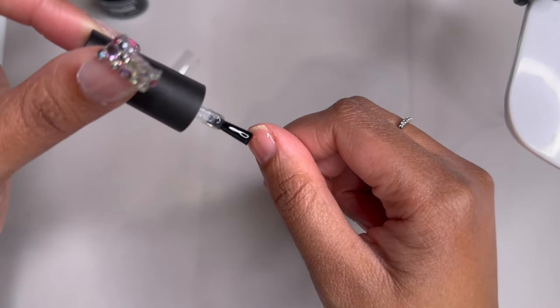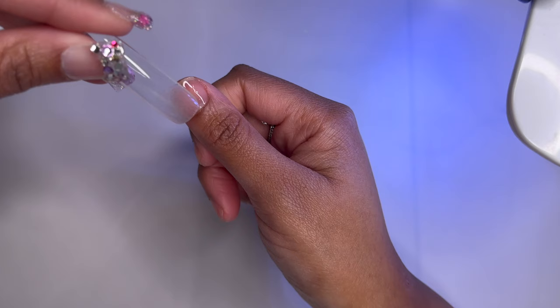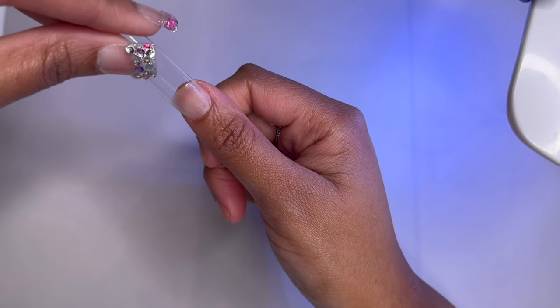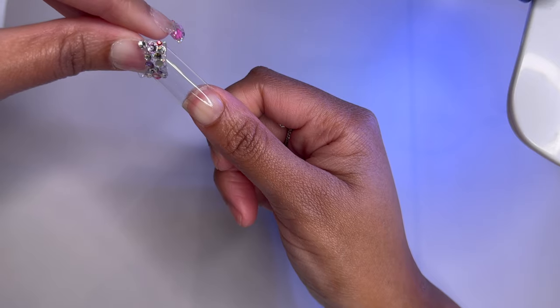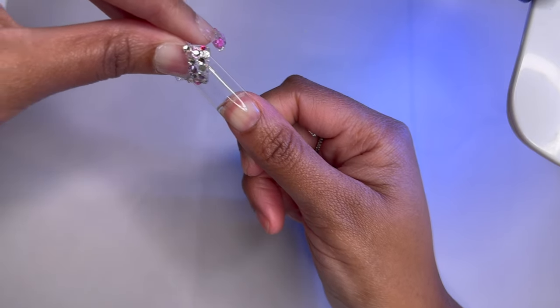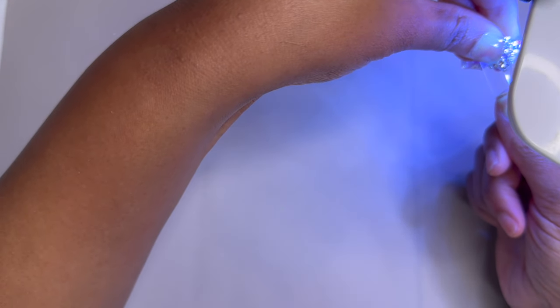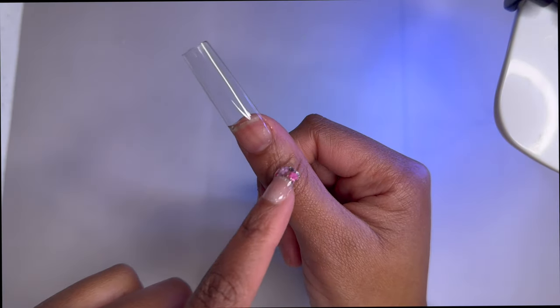Next we're going to apply the base gel directly onto the nail in a light generous amount. We're going to go in at a 45 degree angle and press down until the nail glue reaches the top of the natural nail then cure for 15 seconds.